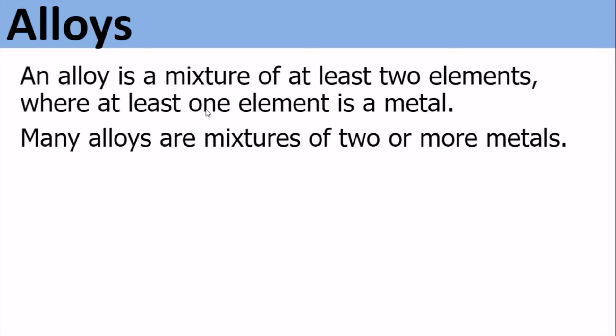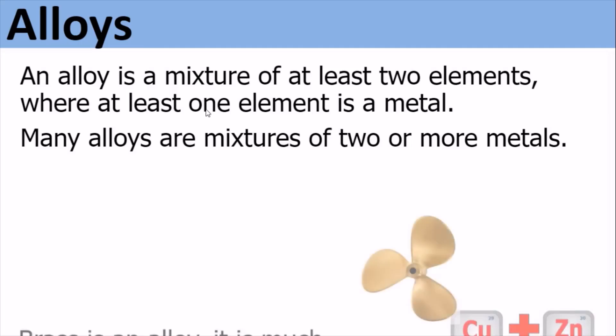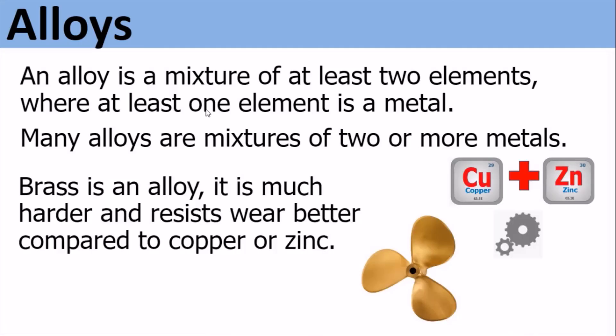Alloys. Brass is a mixture of two metals. An alloy is a mixture of at least two elements, where at least one element is a metal. Many alloys are a mixture of two or more metals. Brass is an alloy — it is much harder and resists wear better compared to copper or zinc alone, so it has better properties than the two base metals.